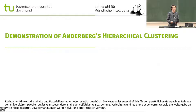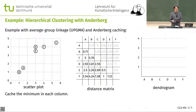We can look at both of them on the same data set we had before, except that this time we are going to use group average clustering. It gets a bit more interesting. We have the same distances, same distance matrix, just other linkage.